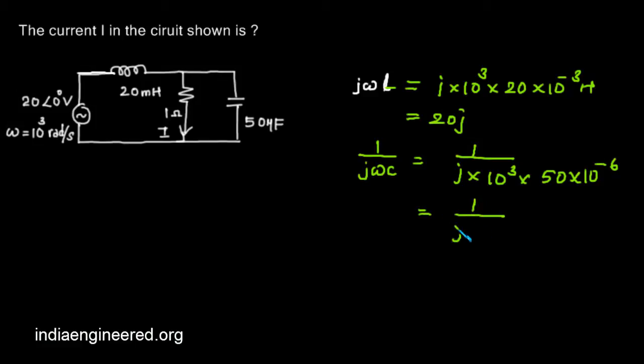It will be -20j as this j comes to the top making -j. Now we have found out this as -20j and here as 20j.